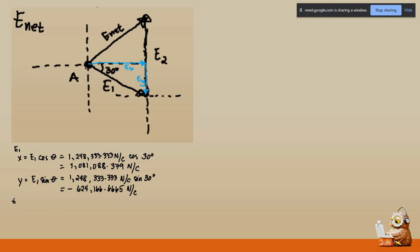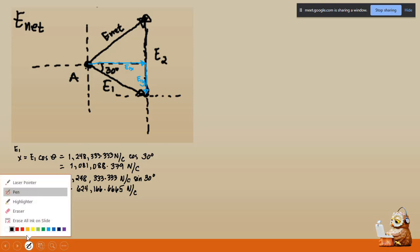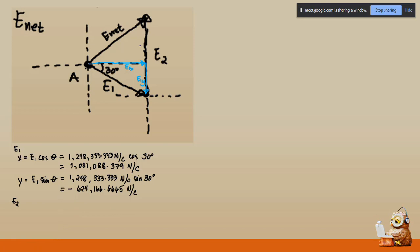For E sub two: since it lies along the y-axis, we drop its components. E sub two has no x component, so E sub two x equals zero. For the y component, E sub two y equals 4,993,333.333 newtons per coulomb. Those are the values for E sub two x and E sub two y.